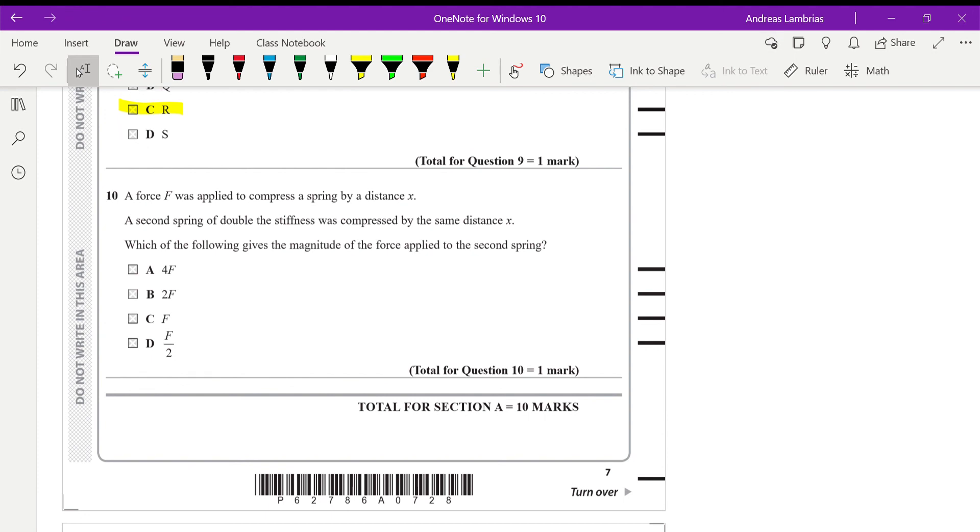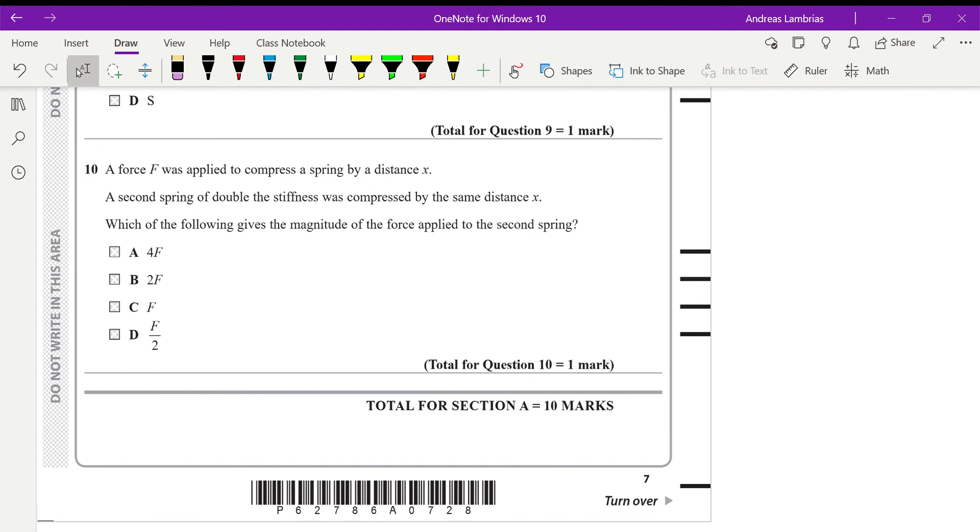And the last multiple choice question of this paper, we have a spring that is compressed with a force f for a distance x. So in the first spring, f equals k times extension, or the compression in that case. So this is Hooke's law. Now this is the second spring of double the stiffness. So that will be 2k, which is compressed by the same distance x. So we can see that kx, which is equal to force 1, is that part of the second equation. So this can be f1. Therefore, we can conclude that f2 equals 2f1. Therefore, b is the right answer.